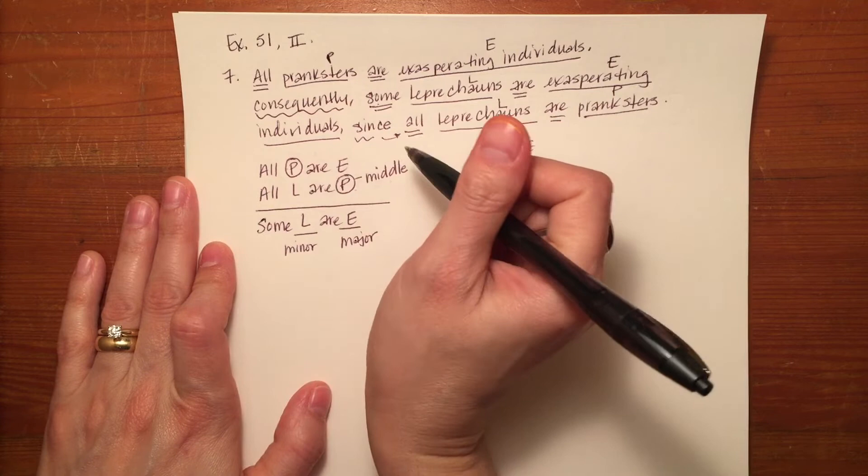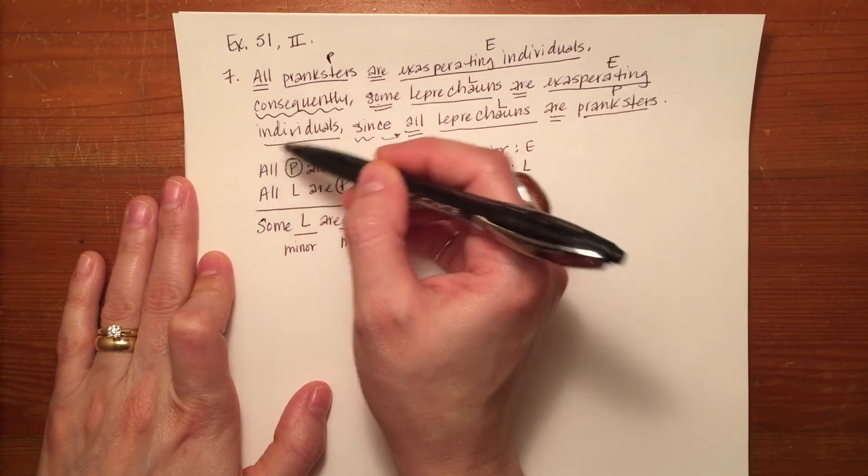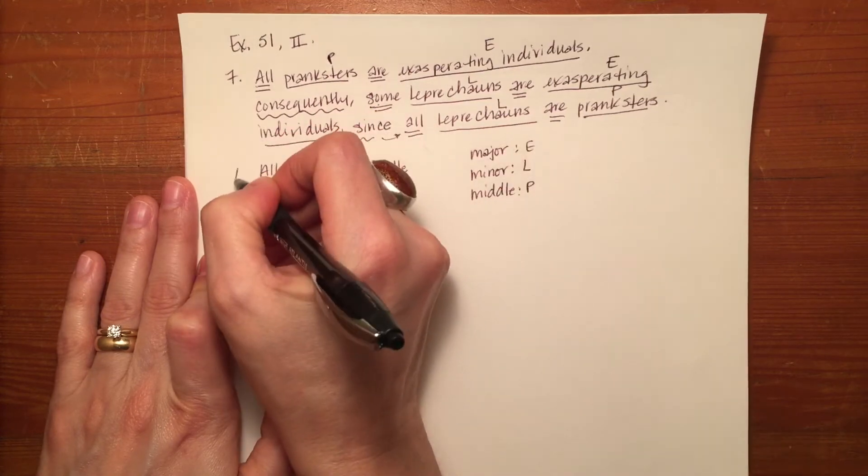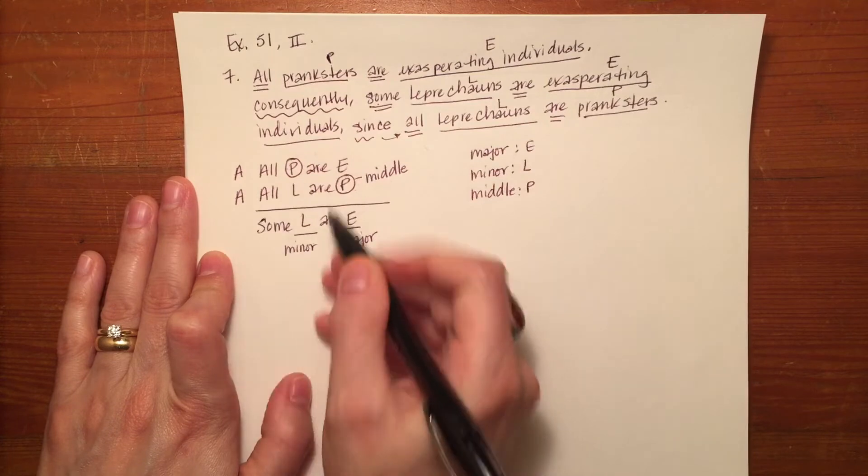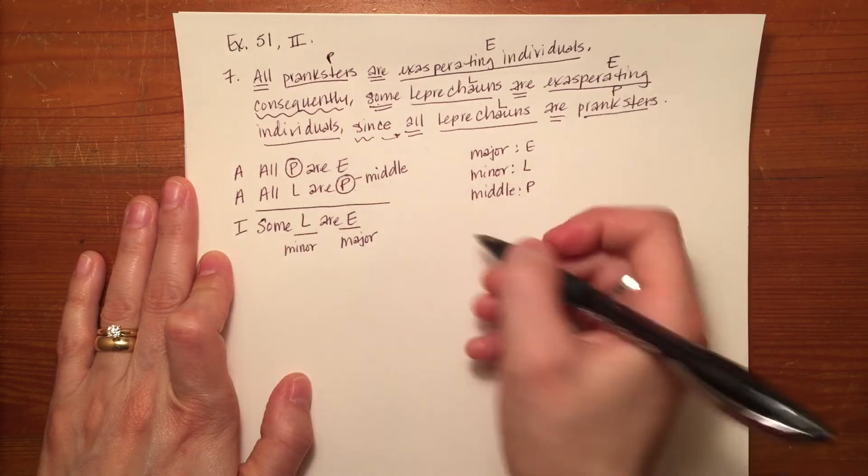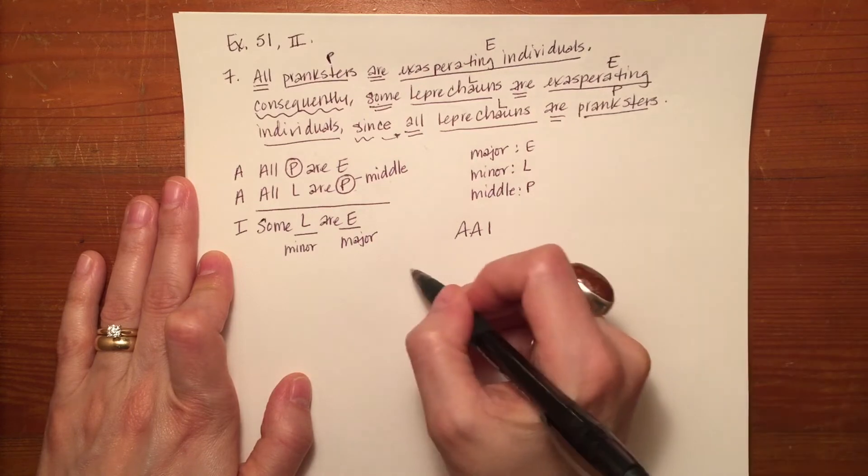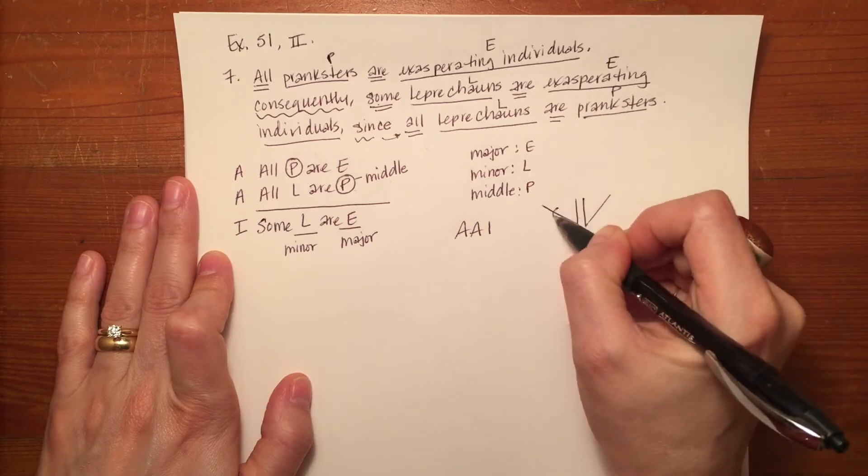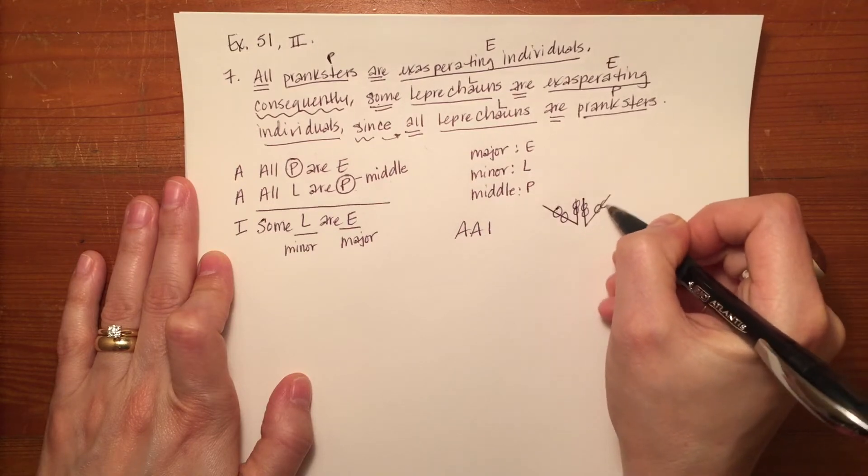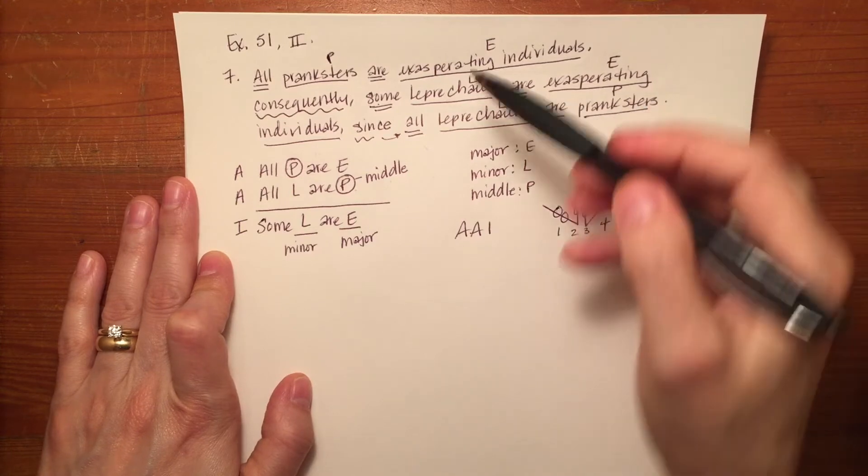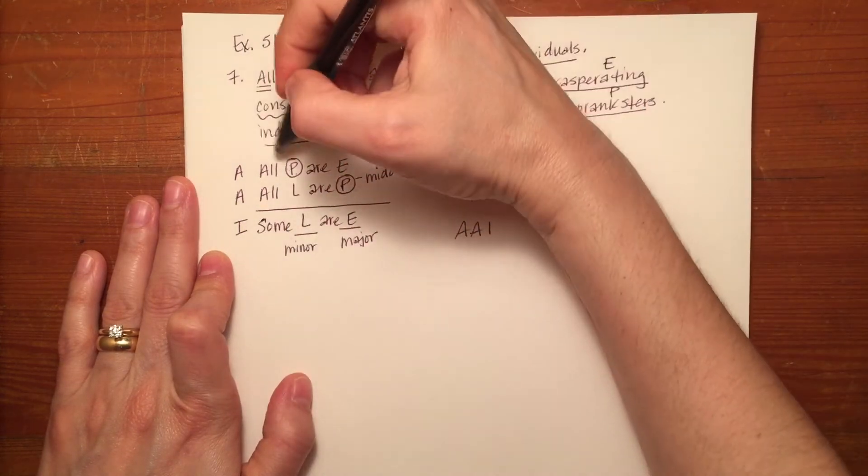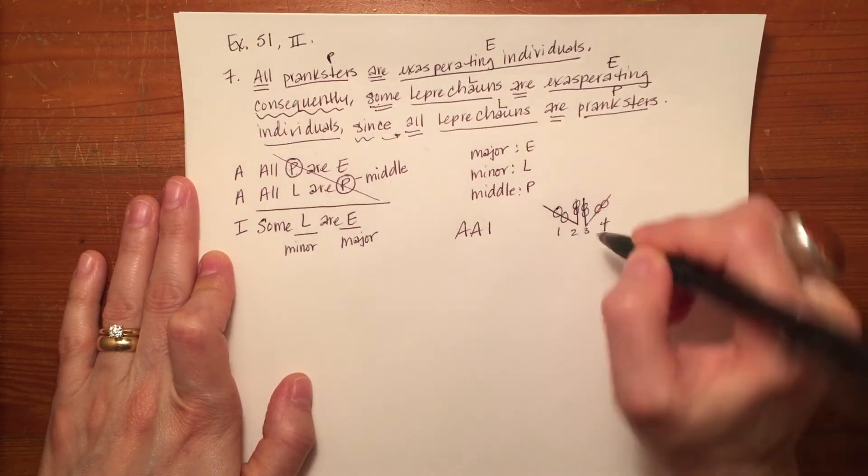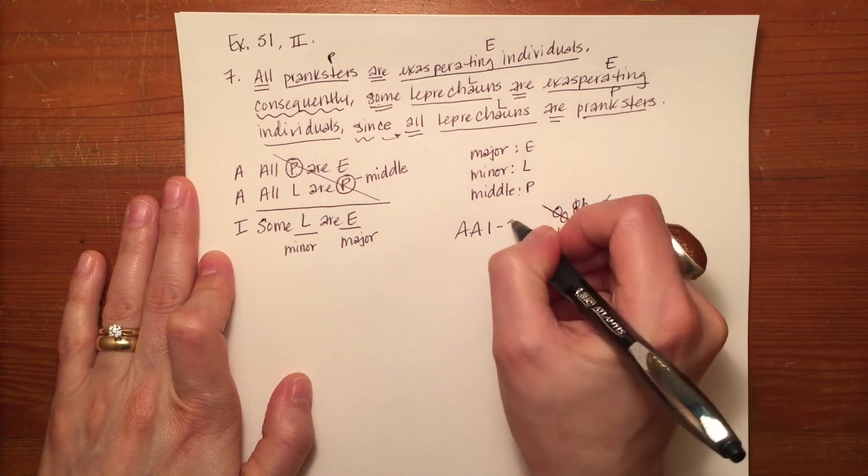Now that I know it's in the correct order, I can figure out the mood by, again, from top to bottom, listing the letter names of the statements. So in this example, it's A, A, I. If I think about the shirt collar, I can see very easily that this is figure one because of the pattern of the middle terms. So A, A, I, one.